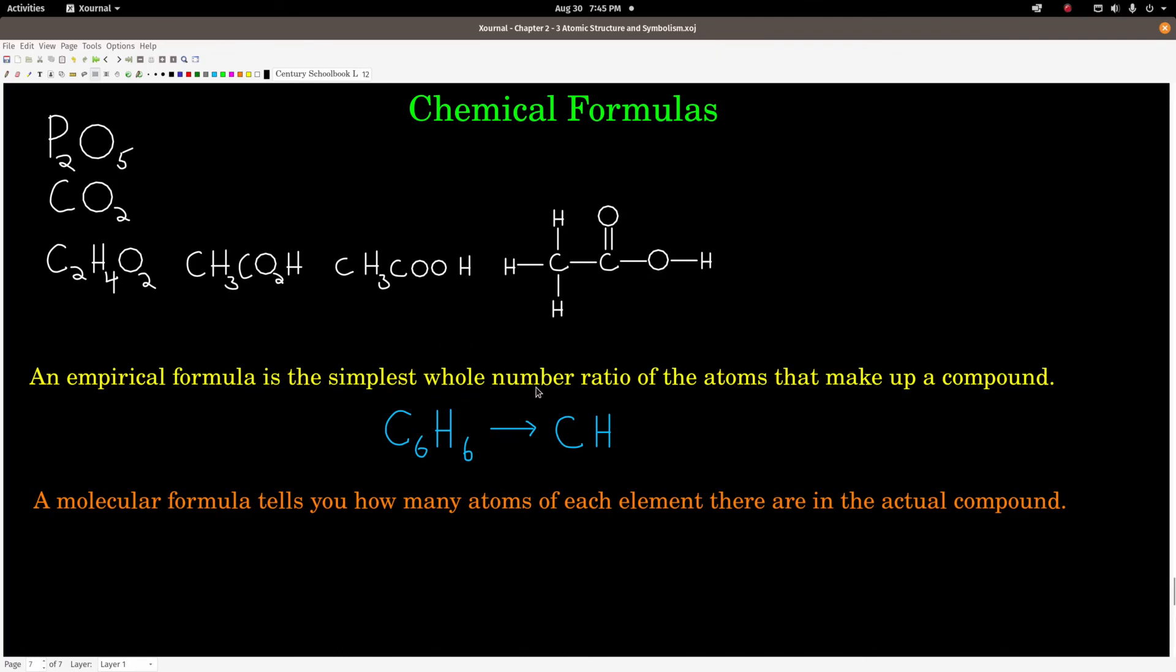An empirical formula is the simplest whole number ratio of the atoms that make up a compound. For example, the formula for benzene is C6H6. The simplest whole number ratio is 1 to 1. So the empirical formula for C6H6 would be CH. Now, that CH is the empirical formula for probably hundreds of different, at least, of different compounds. So it's not unique to that compound. But it does give us some information. Whereas a molecular as opposed to empirical formula, a molecular formula tells you actually how many atoms of each element there are. So, yeah, this would be a molecular formula. The empirical formula for this, by the way, would be CH2O. There we go.